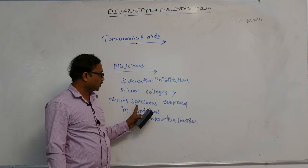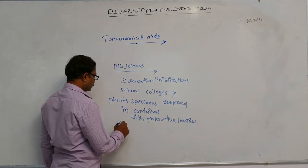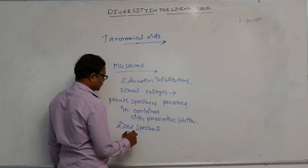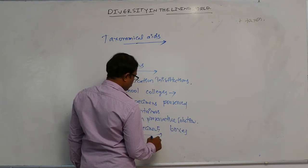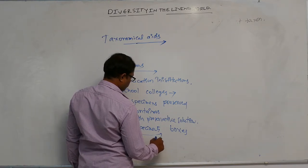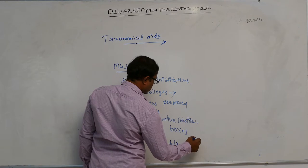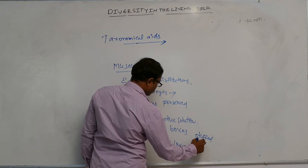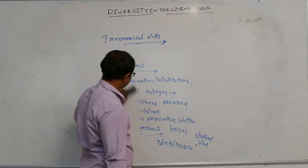In museums, specimens are preserved in containers with preservative solutions. Dried specimens are also present in mount boxes. Examples of museum specimens include bones, skeletal structures, stuffed birds, and mouth parts of insects.